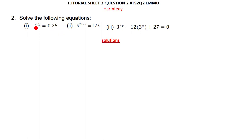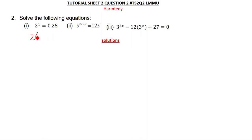Let's look at the first question. This one says 2 to the power x is equal to 0.25. This one is simple and straightforward — you can just convert 0.25 to a fraction. So we have 2^x and we convert that 0.25 to a fraction.